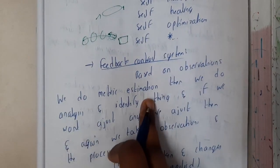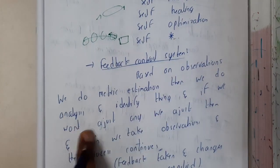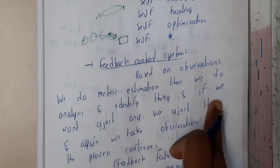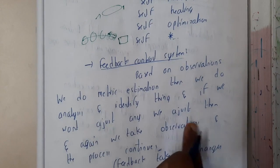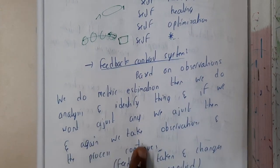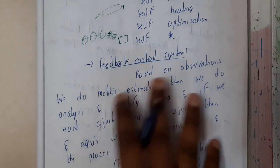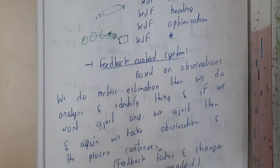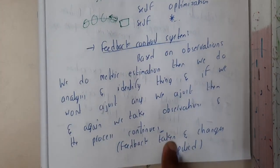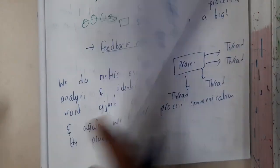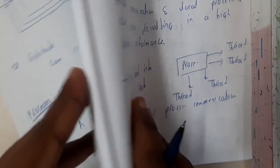Based on observation, we do metric estimation, then we do analysis and identify things. If we want to adjust anything, we adjust again, take observations, and the process continues. This whole process continues on observations and feedbacks. Feedback is taken and changes are applied.